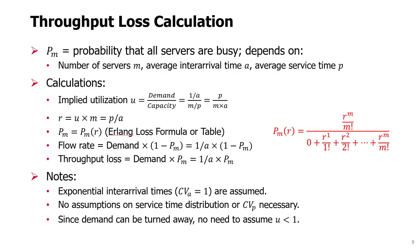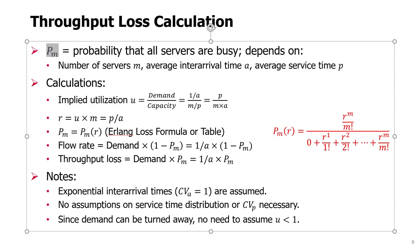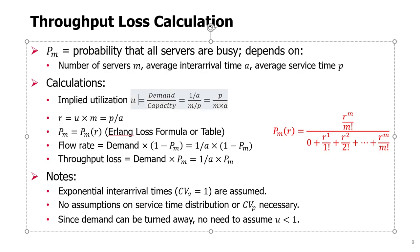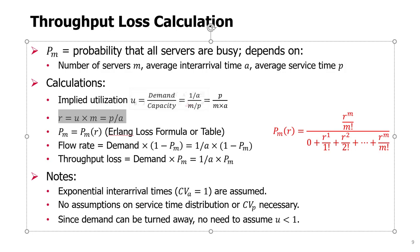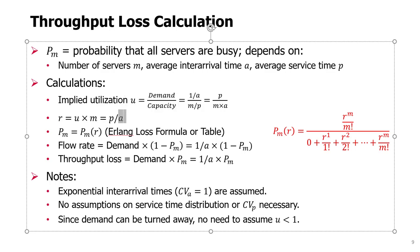The calculations we need to do: first, find the probability PM that all servers are busy. That probability depends on the number of servers M, the inter-arrival time A, and the service time P. We calculate implied utilization as demand divided by capacity, which is (1/A) divided by (M/P), simplified to P divided by (M times A). Then we calculate parameter R, which is the ratio of service time to inter-arrival time, necessary for the Erlang Loss formula that calculates the probability of all servers being busy.